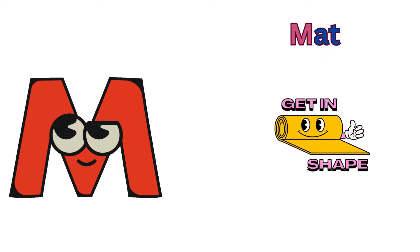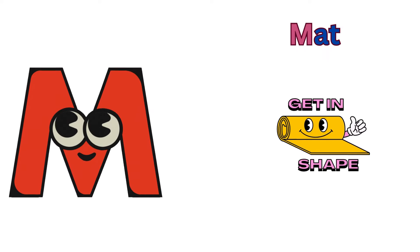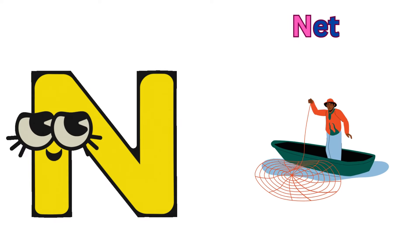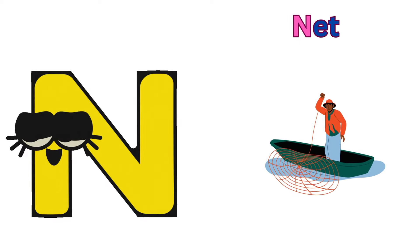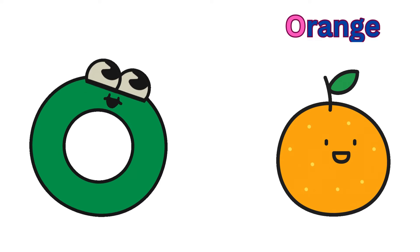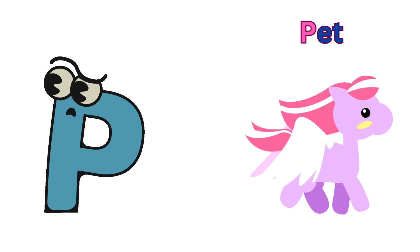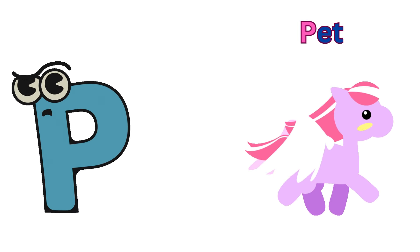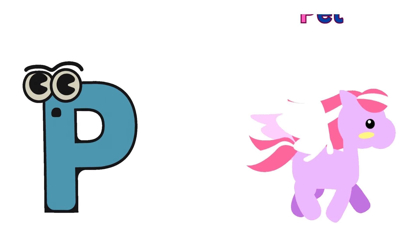M is for mat, m-m-mat. N is for net, n-n-net. O is for orange, o-o-orange. P is for pet, p-p-pet.